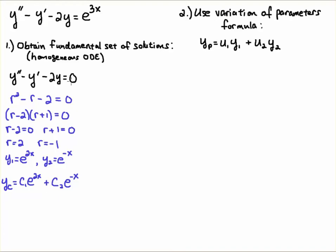In order to solve this equation we first solve the homogeneous part, because all solutions to ODEs are the homogeneous solution plus a particular solution. To solve the homogeneous ODE and obtain the fundamental set of solutions, we write the characteristic equation, use the quadratic formula or factor it, get the roots, and plug them into the exponentials. Here we have e to the 2x and e to the minus x, so the complementary function is c1·e^(2x) + c2·e^(-x), which has the arbitrary constants associated with it.